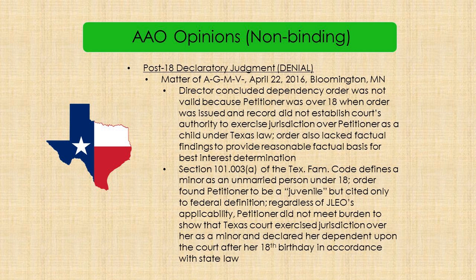The next decision, Matter of AGMD, is a recent one out of Minnesota but involves a Texas post-18 order in the form of a declaratory judgment. The AAO found that the petitioner did not meet her burden to show that the Texas court exercised jurisdiction over her as a minor and declared her dependent upon the court after her 18th birthday in accordance with Texas law. The lesson from this one is to avoid references to the federal definition of juvenile and to look at state law for relevant definitions.